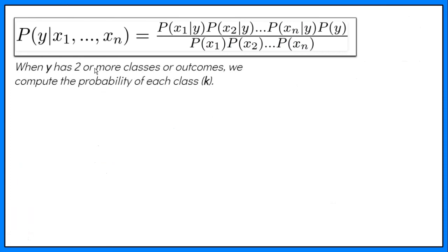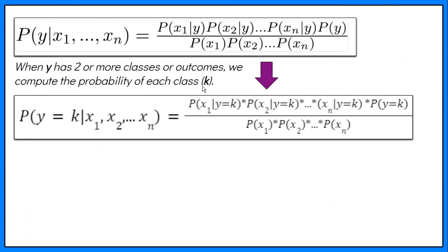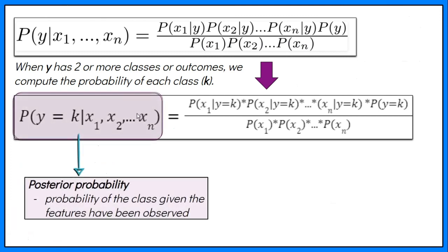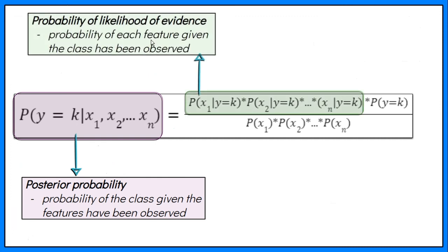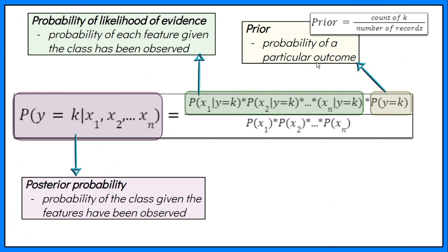If Y has two or more classes or outcomes, we compute the probability of each class of Y. The symbol K represents each class. After the computation, the highest probability will be the predicted outcome for a given problem. In technical jargon, the left-hand side of the equation is understood as the posterior probability — a probability of the outcome given the features have been observed. The right-hand side has two terms in the numerator. The first term is called the likelihood of evidence, which is the conditional probability of each feature given a particular outcome.